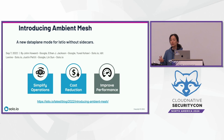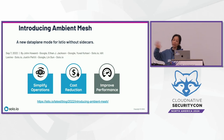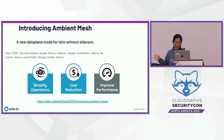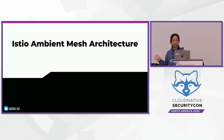When we introduced Ambient in the community, there are three things we're focusing on. The first and most important is simplifying operations — we want the transition into and out of the mesh to be super transparent, with no application pod restarts required. The second is cost: instead of using half your infrastructure resources on sidecars, we want to dramatically bring that cost down. The third is improved performance.